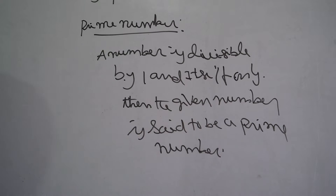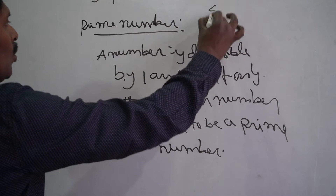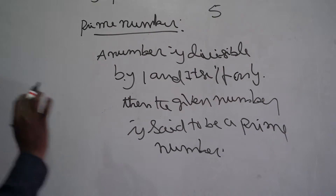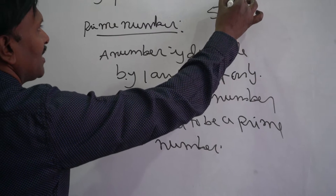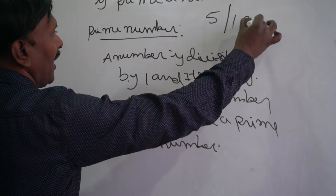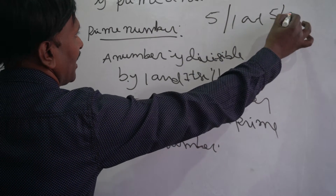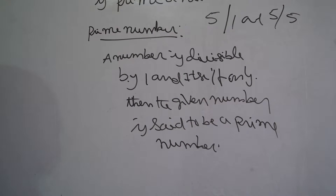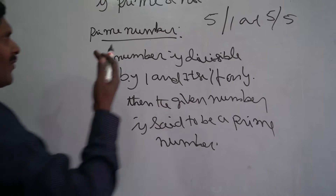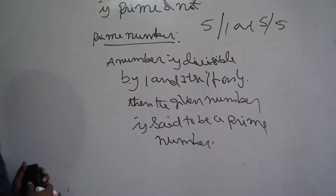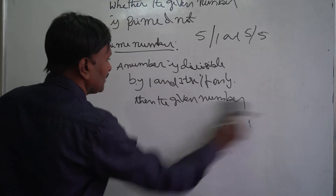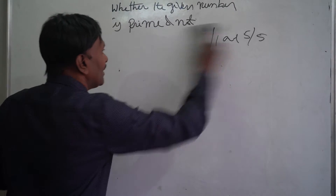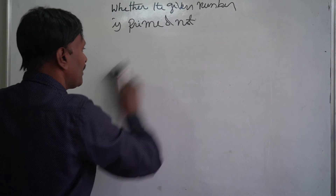Suppose if a number is divisible by one and itself, no other number — only one and itself. If it is divisible by one and itself, then we can say that the given number is a prime number. It means no other factors for that particular number. Then we can say that the given number is a prime number. So that is the definition of the prime number.